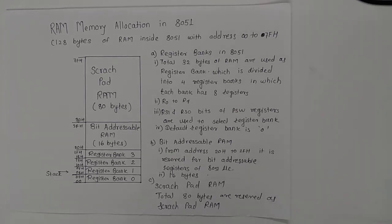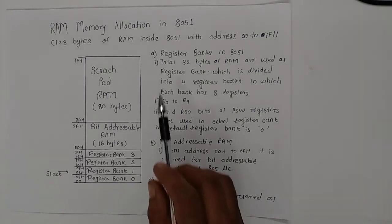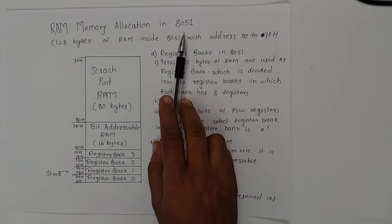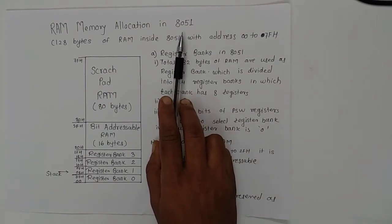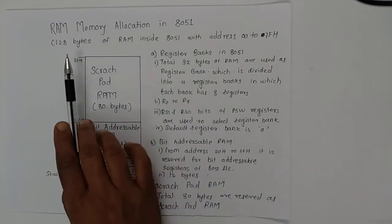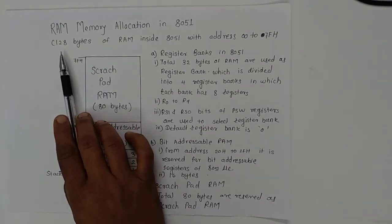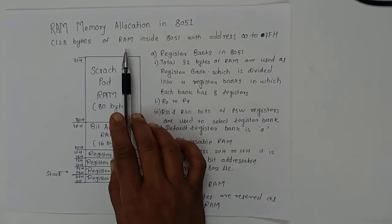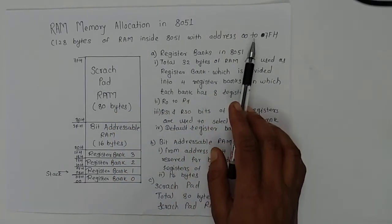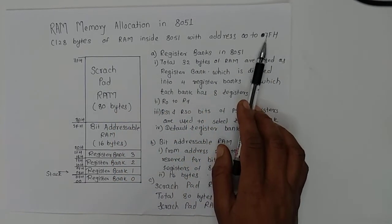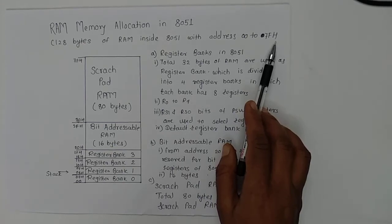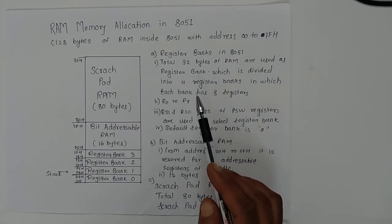Hello everyone, this is Pallavi Mahagavkar. In this lecture we are going to learn about the memory allocation in 8051 microcontroller. We know that in 8051 microcontroller we have 128 bytes of RAM with address 00H to 7FH. This RAM is divided into three parts.